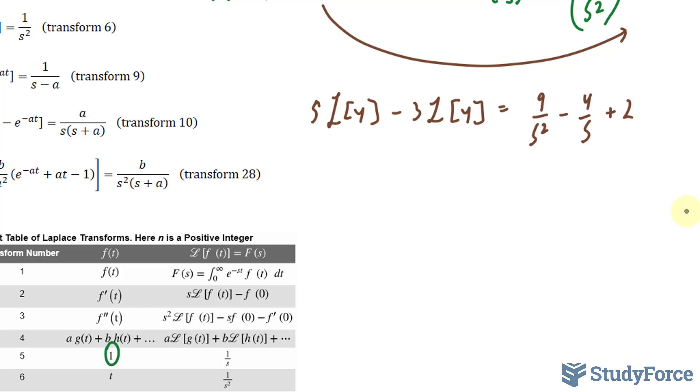Just like I did in question number 1, notice that on the left side, the transform of y is in common. So I can factor that out: the Laplace transform of y, bracket (s − 3), and the right side stays the way it is.